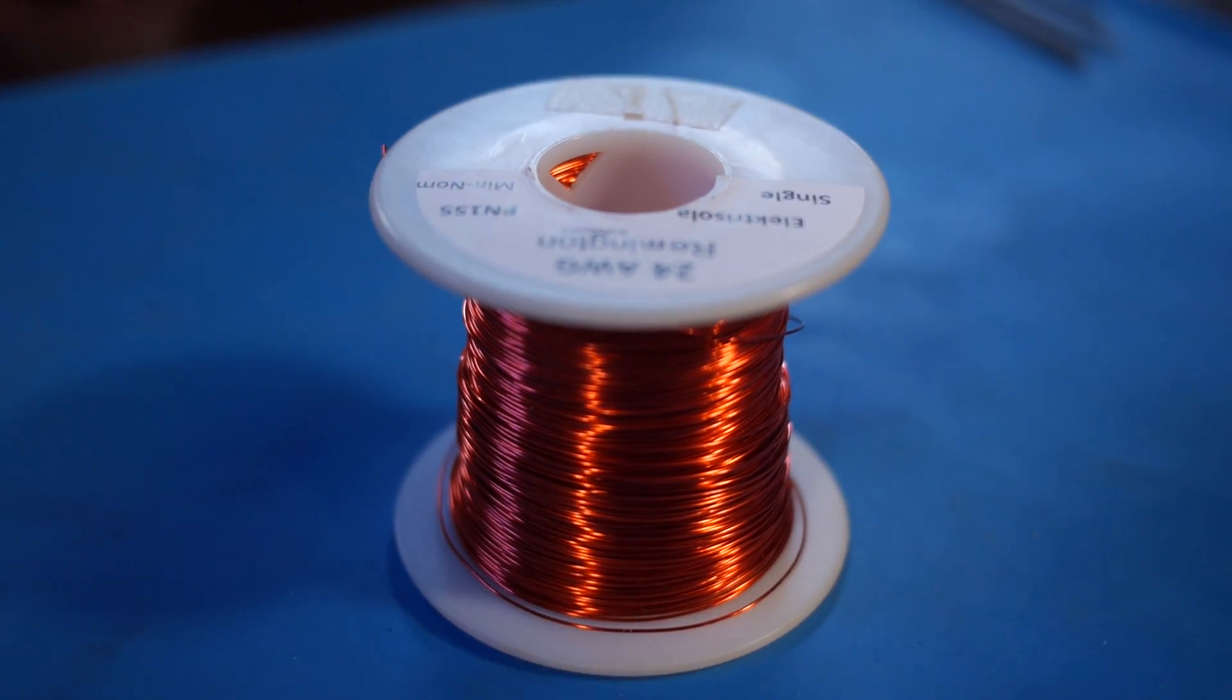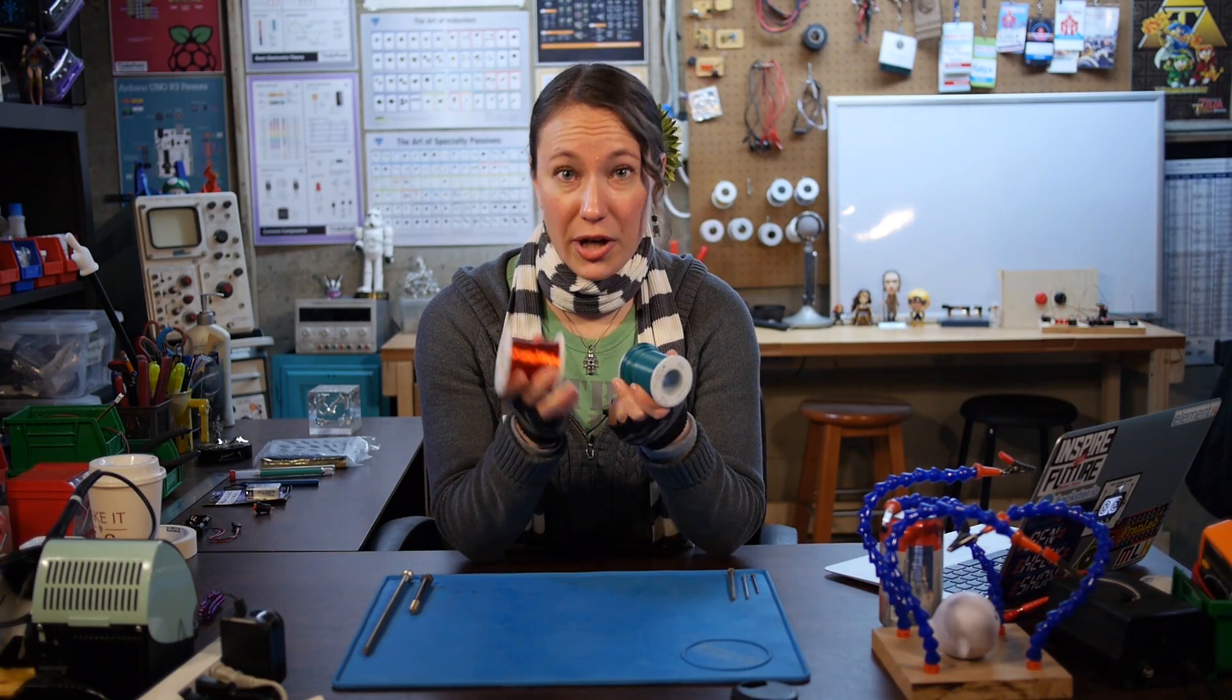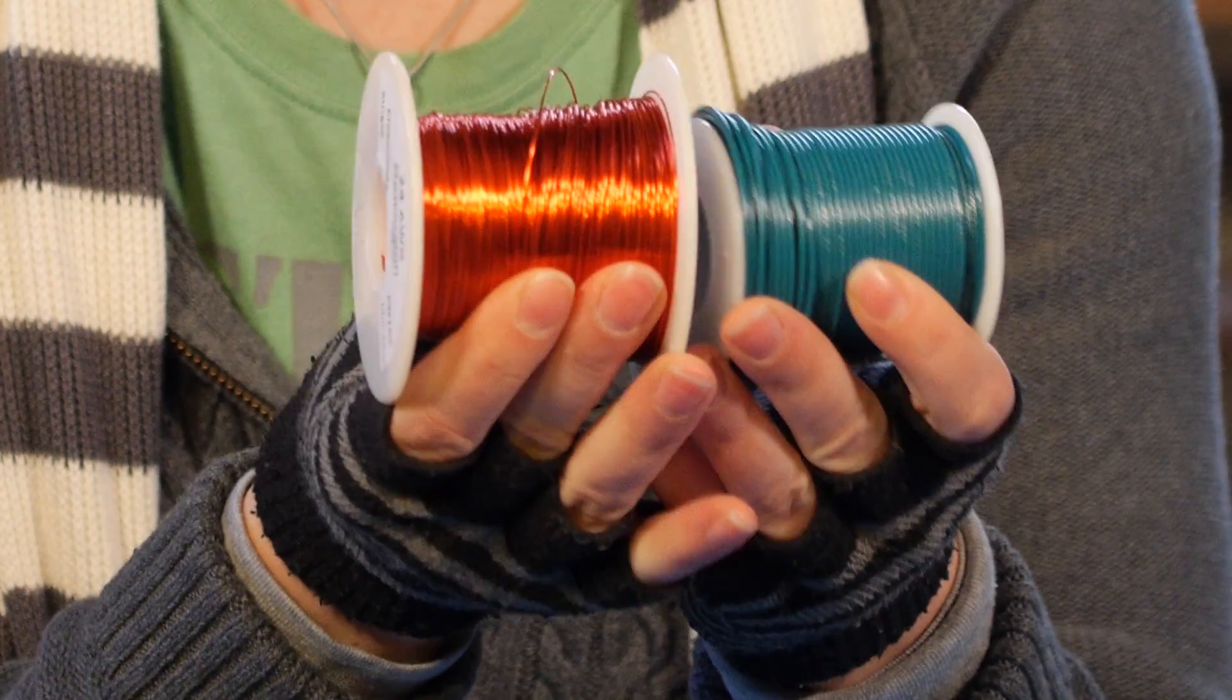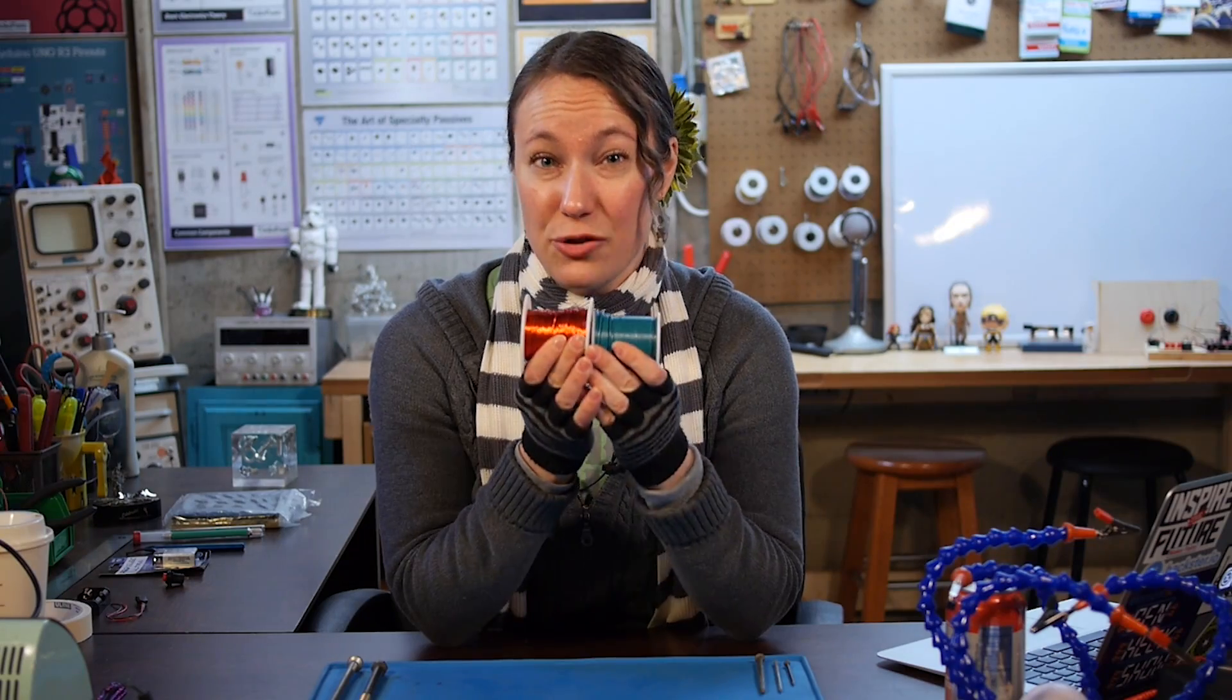We want to use magnet wire instead of insulated wire. This wire has a thin enamel coating and because it's so thin, we can get our turns and our coil much closer together, which gives us a stronger magnetic field.